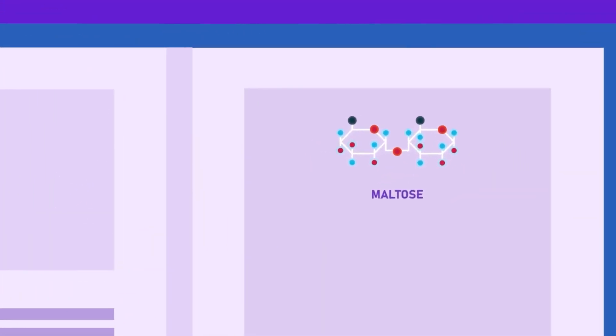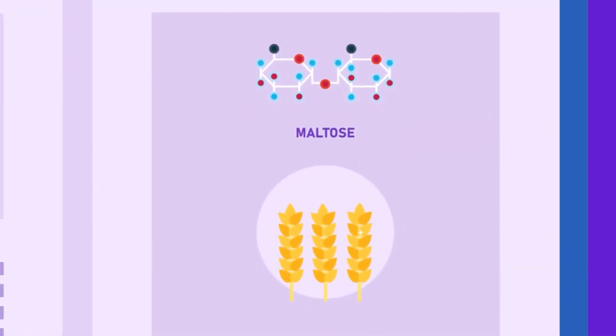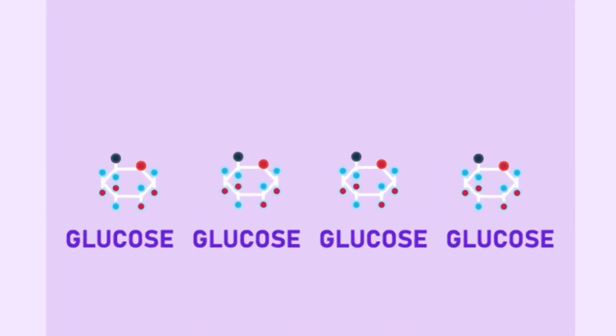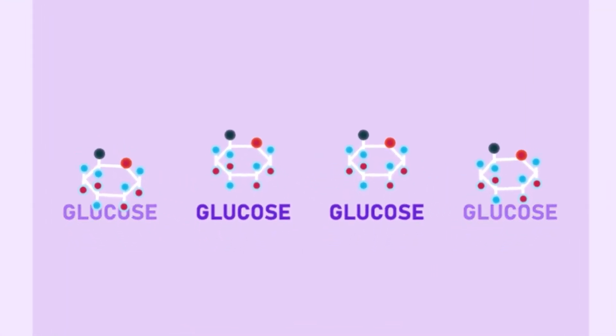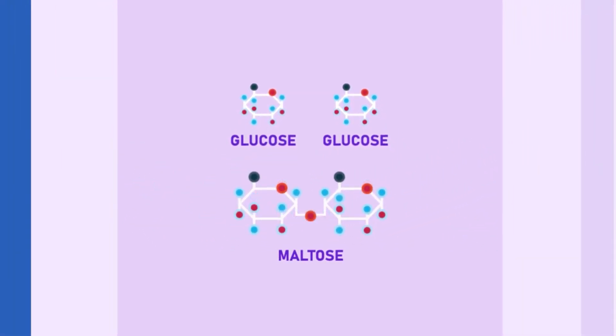Maltose, known as malt sugar, is present in malted cereals and sprouting grains. It is formed from the partial digestion of starch and is a combination of two glucose molecules.